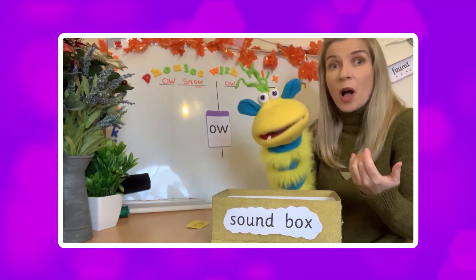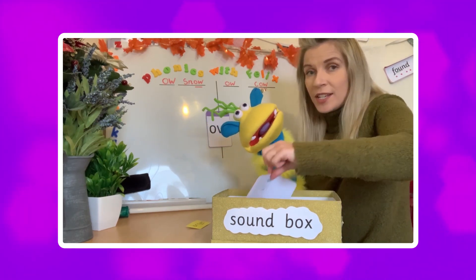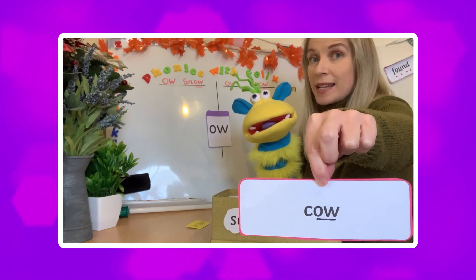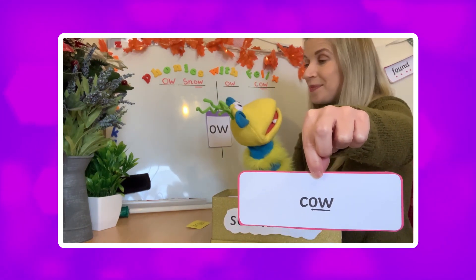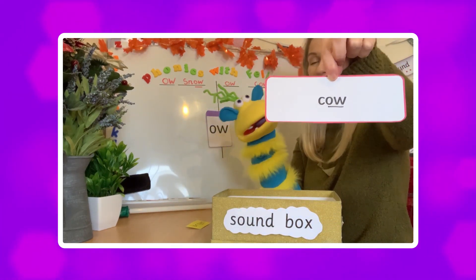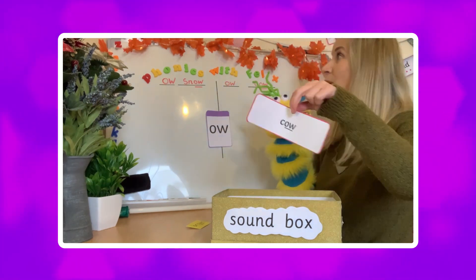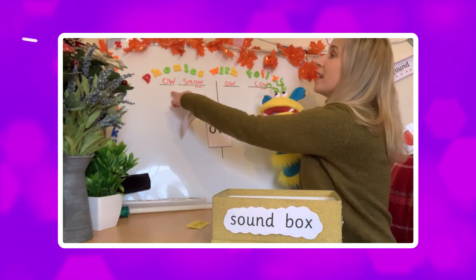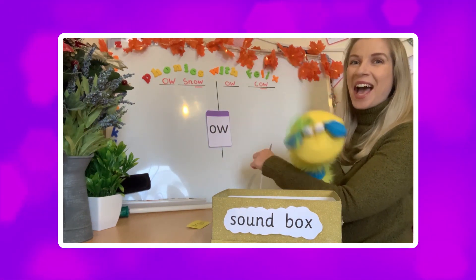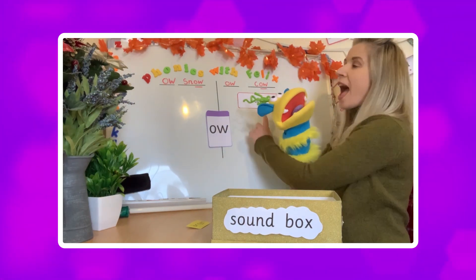Does the word sound like 'O' or does it sound like 'OW'? Let's work it out. I'm going to hold it up to the screen so you can see it. How would we sound this word out? Felix sounds it out: C-OW. Cow. Well done! So is it on the 'O' as in snow side, or the 'OW' as in cow side? It's OW as in cow, isn't it — cow!